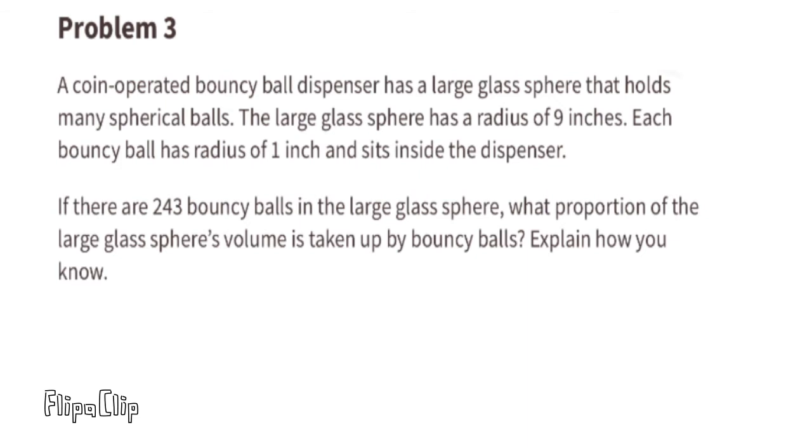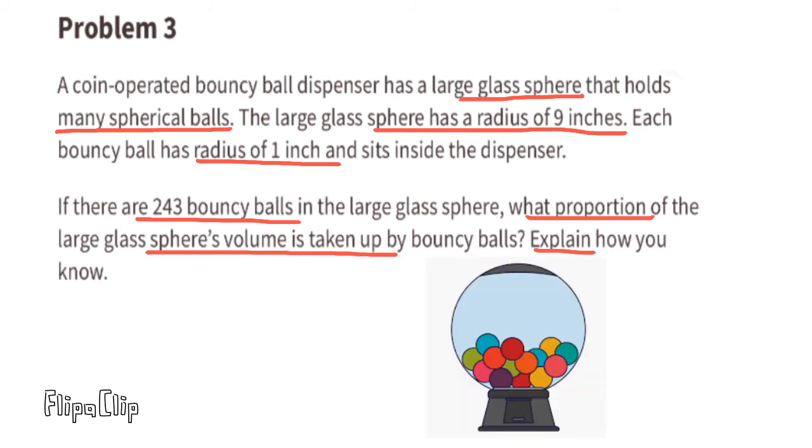Problem number three. A coin-operated bouncy ball dispenser has a large glass sphere that holds many spherical balls. The large glass sphere has a radius of 9 inches. Each bouncy ball has a radius of 1 inch and sits inside the dispenser. If there are 243 bouncy balls in the large glass sphere, what proportion of the large glass sphere's volume is taken up by bouncy balls?